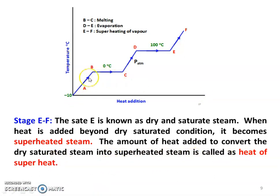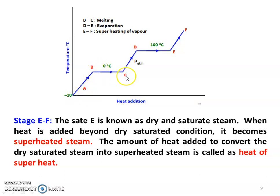Summary of all stages from A to F: A to B — heating the ice (sensible heat of ice); B to C — converting ice into water (latent heat of fusion); C to D — heating the water (sensible heat of water); D to E — converting water into steam (latent heat of vaporization); E to F — heating the steam (superheating the steam).